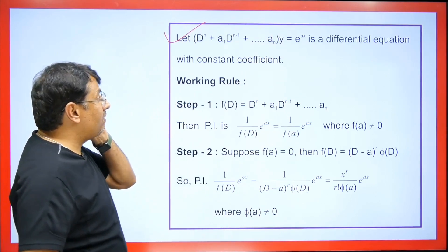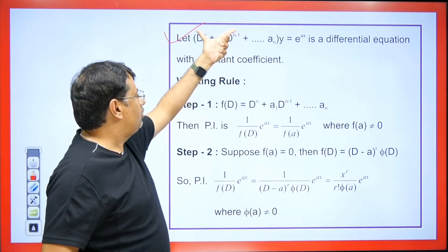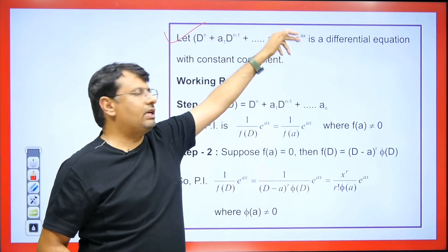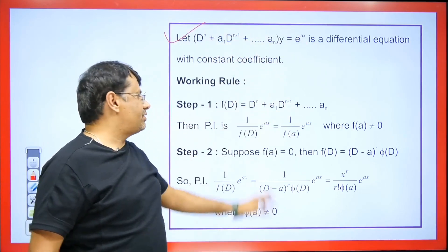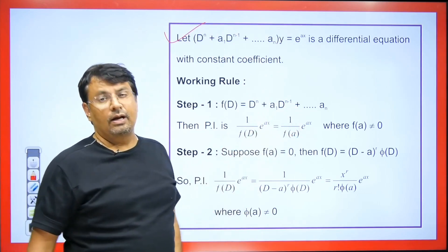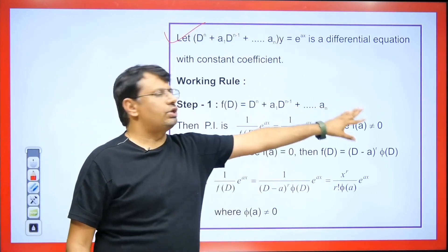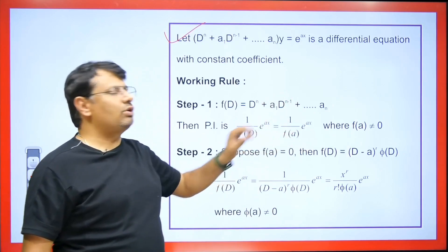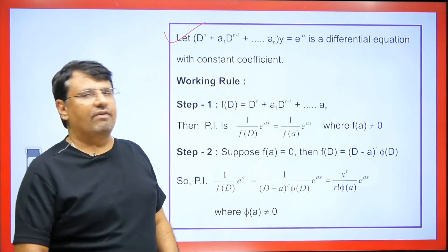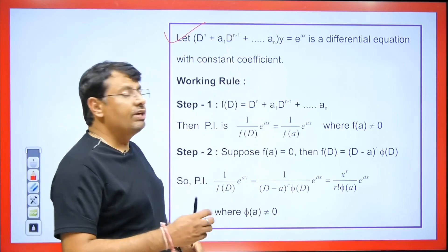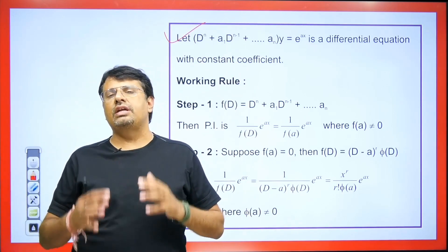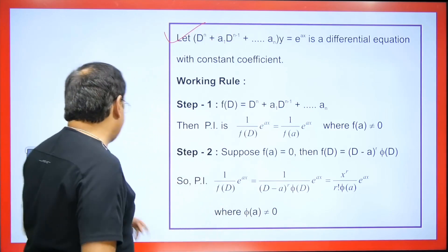Whenever we are given a differential equation, the entire symbolic form (in D) is taken to the denominator below e^(ax), and wherever there is D, we replace it with A. This gives the particular integral, provided the denominator is nonzero. If the denominator becomes zero, we multiply the numerator by x and differentiate the denominator, repeating continuously until the denominator becomes a nonzero term.